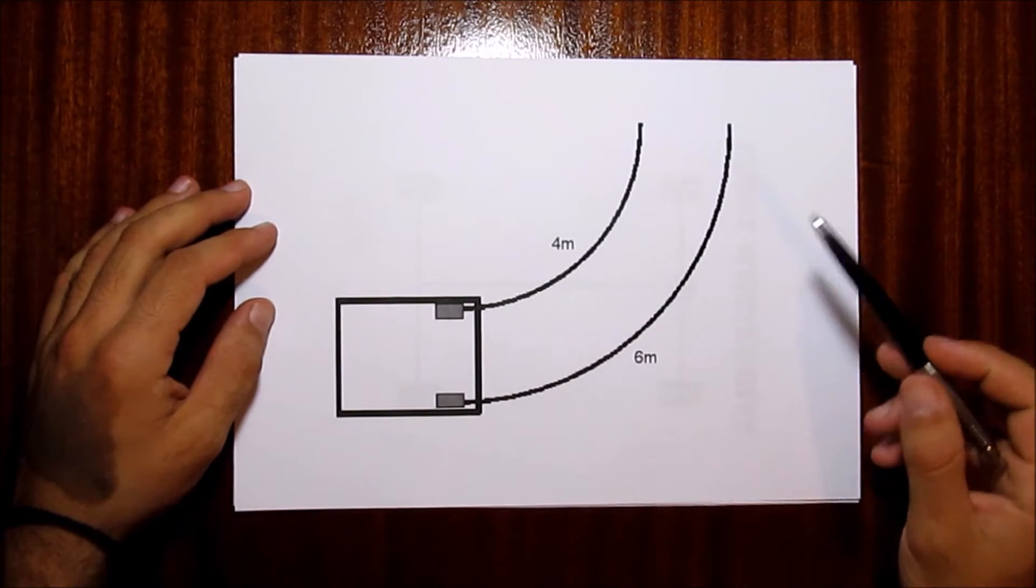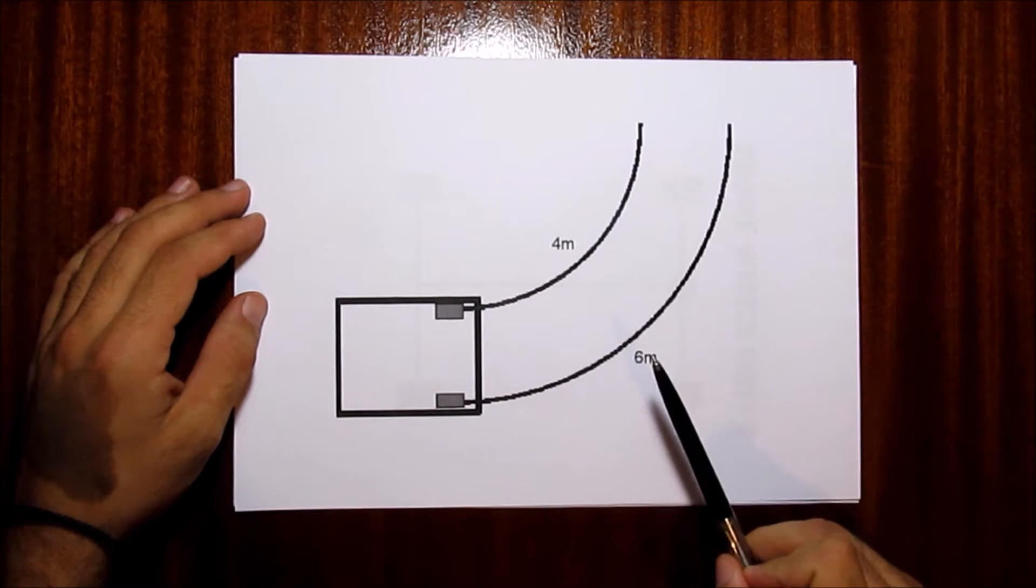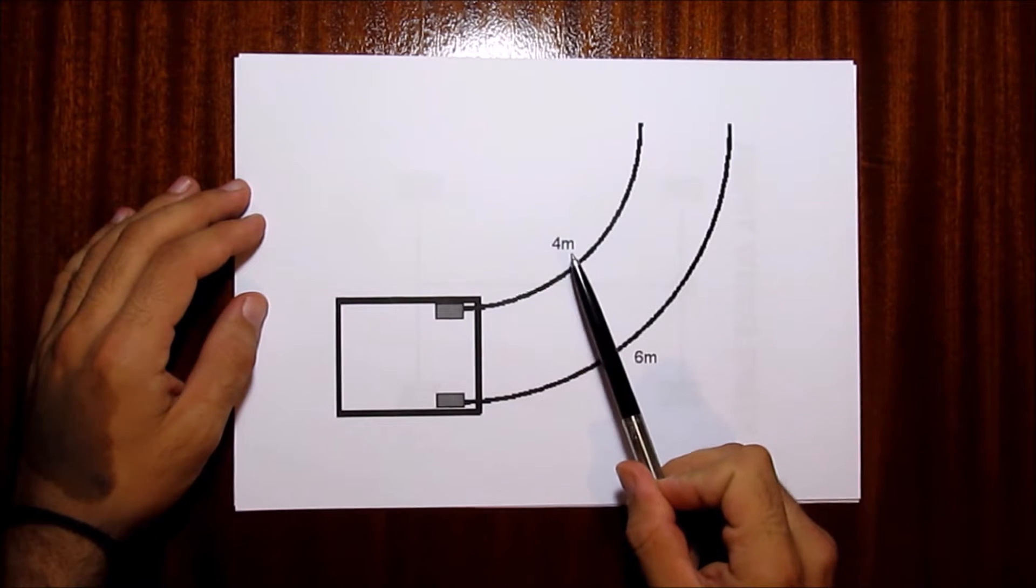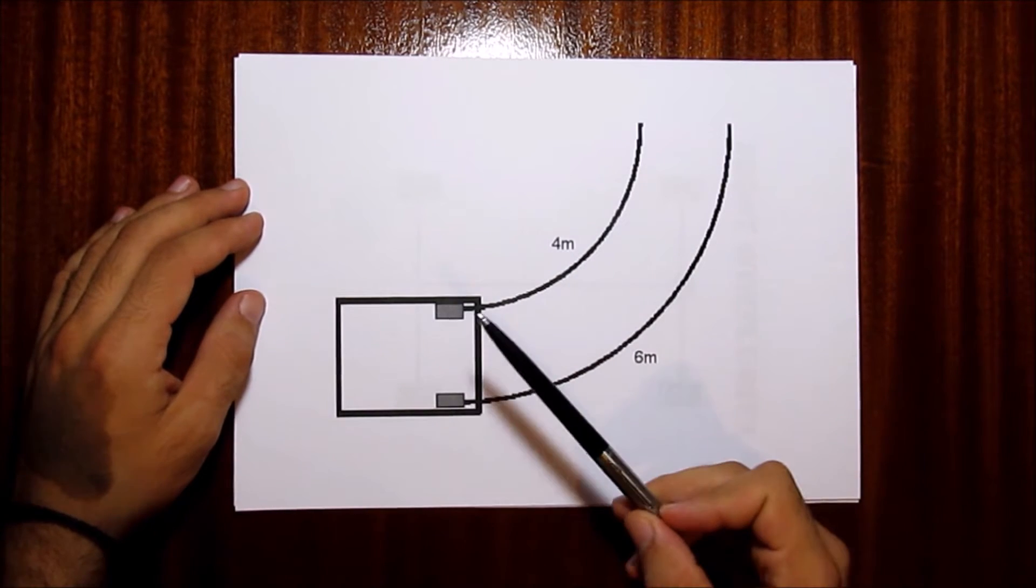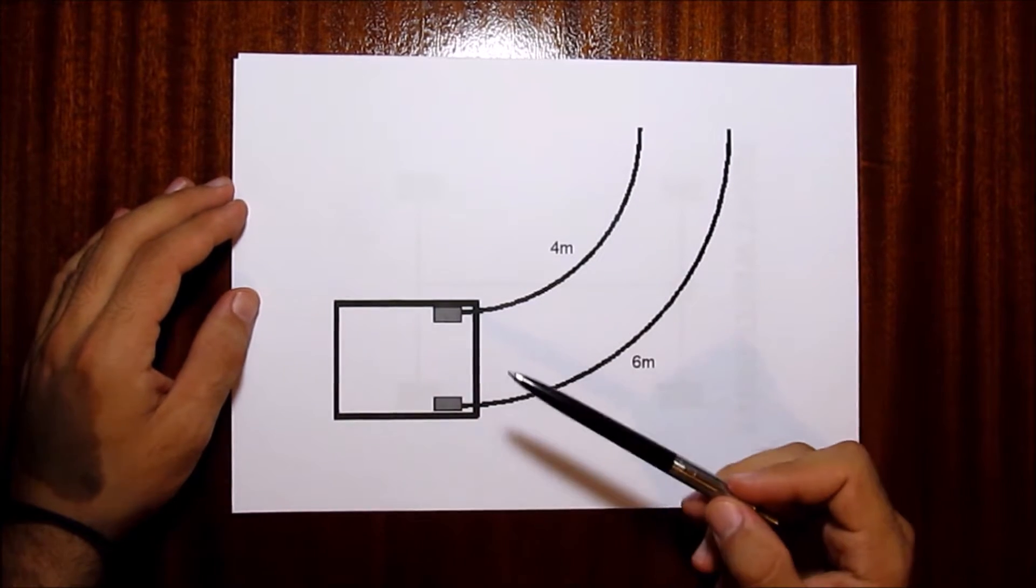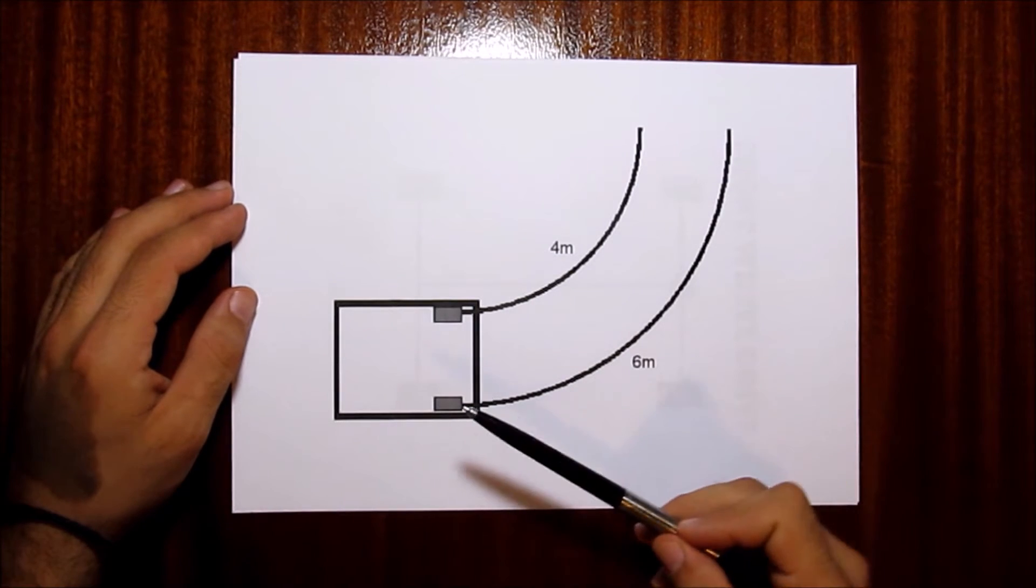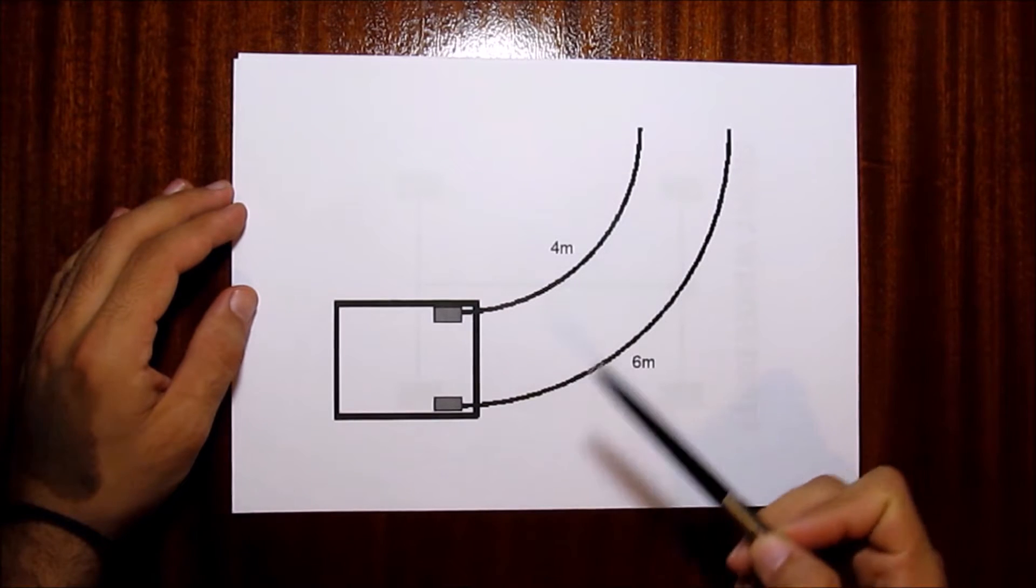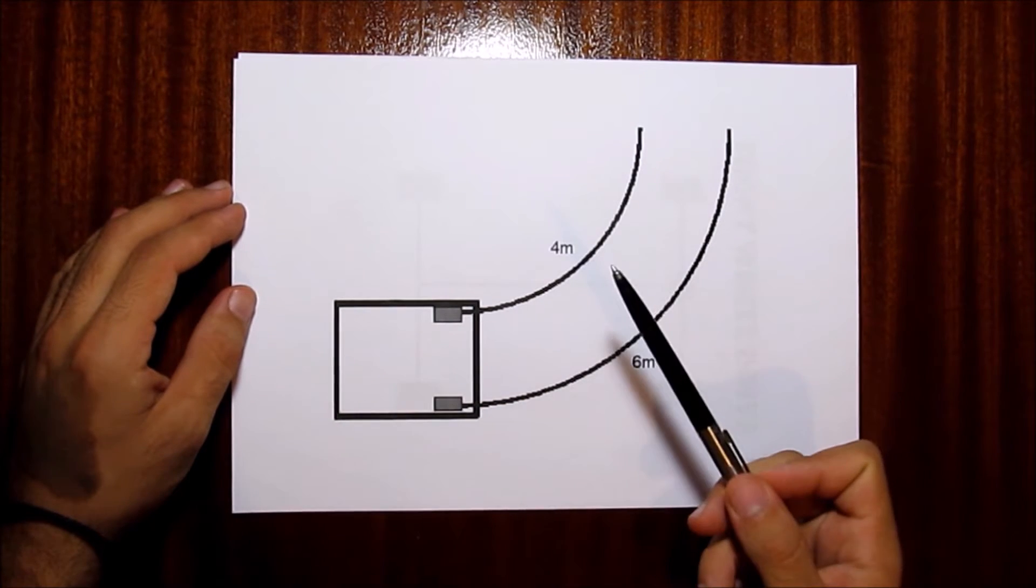Imagine that these two wheels are powered by the engine. This is a distance of 6 meters that the first wheel has to cover and this is a distance of 4 meters that the second wheel has to cover. Both wheels have the same diameter. If we assume that one rotation covers 1 meter then wheel number 1 has to rotate 6 times to cover its distance and wheel number 2 has to rotate 4 times to cover its distance.